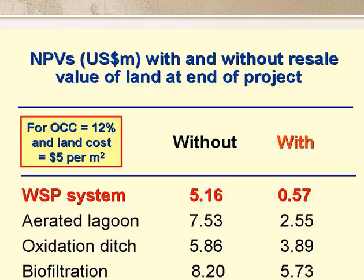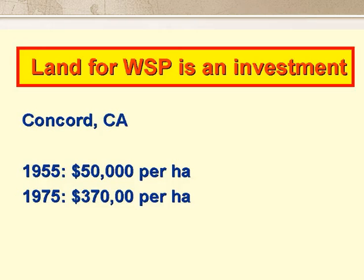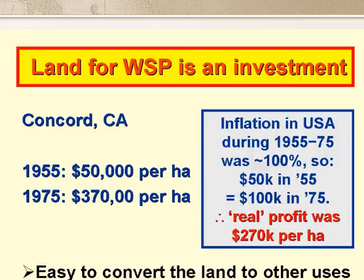This slide shows Arthur's results as before, but with one very important difference. In the column on the right, we have included the resale or salvage value of the land at the end of the project life. And this is really where ponds score highly — their NPV is now very much less than those of the other three systems. So land bought for ponds is an investment. A really good example of this has been reported for the City of Concord in California: the city bought land for ponds in 1955 for 50,000 dollars per hectare, and by 1975, 20 years later, it was worth 370,000 dollars per hectare. Inflation in the US during this period was more or less exactly 100%, so 50,000 dollars in 1955 was equal to 100,000 dollars in 1975, and thus the profit in real terms was 270,000 dollars per hectare. And of course, it's very easy to convert the land from ponds to some other use, an industrial estate for example.